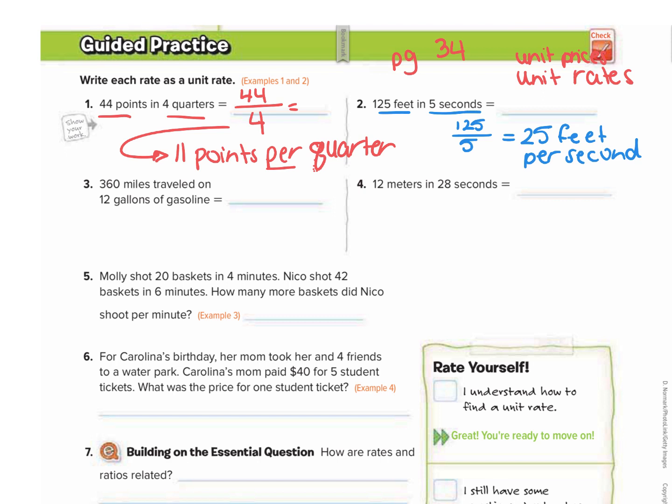Number three, 360 miles traveled on 12 gallons. So we have 360 miles over 12 gallons. So 360 divided by 12 is 30. So we get 30 miles per gallon.